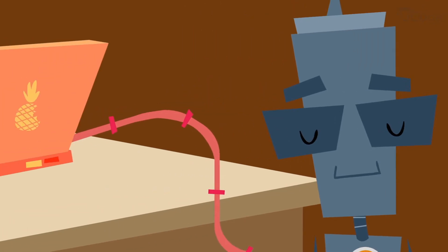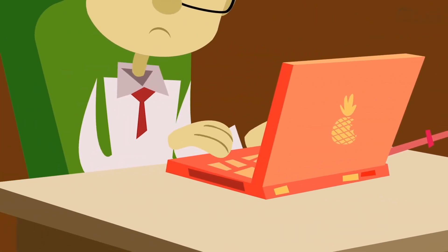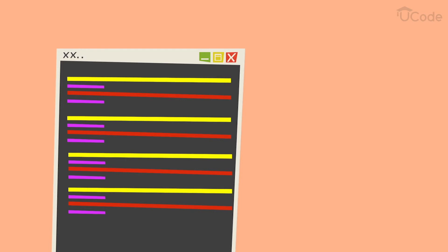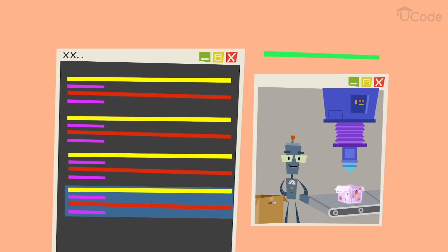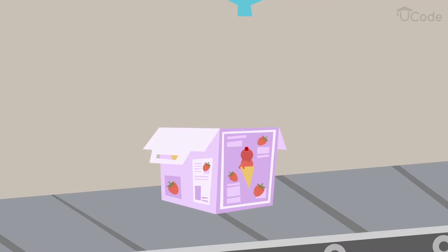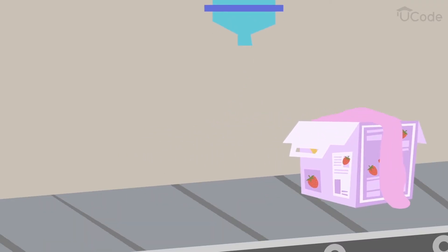Robots need detailed instructions about what to do in programming language. The more complex the task, the more detailed and longer the code is. At times, it can become hard to follow what you wrote.